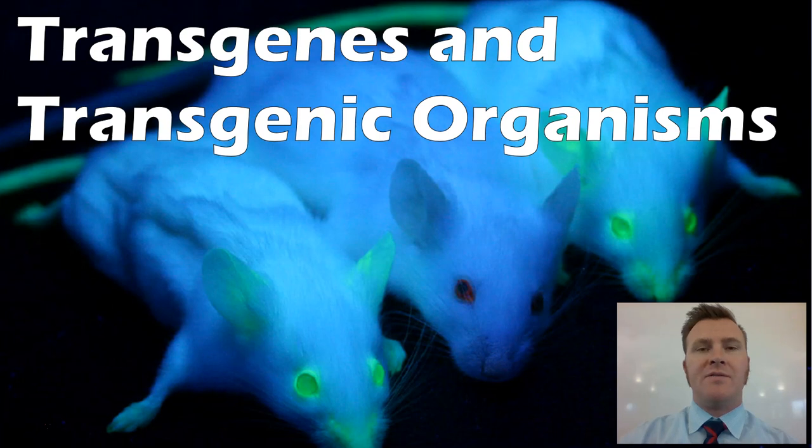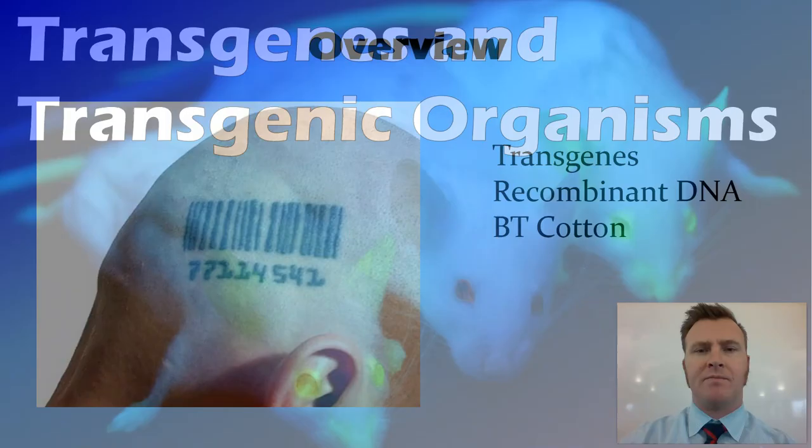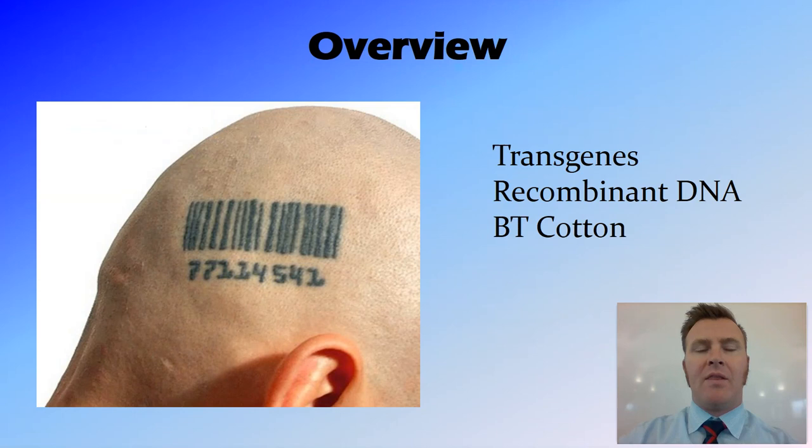In this video we'll be looking at genetic modification using transgenes to create transgenic organisms. We'll first define what those are, then look at the method for gaining these transgenic organisms — the recombinant DNA — and then we'll have a look at an example of BT cotton.